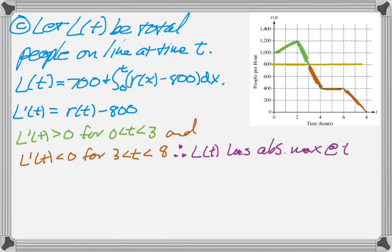So it must be the case that L of T has an absolute maximum at T equals 3 because L prime of T changes from positive to negative, so L of T goes from increasing to decreasing. It's the only place it changes, so it must have its absolute max there.